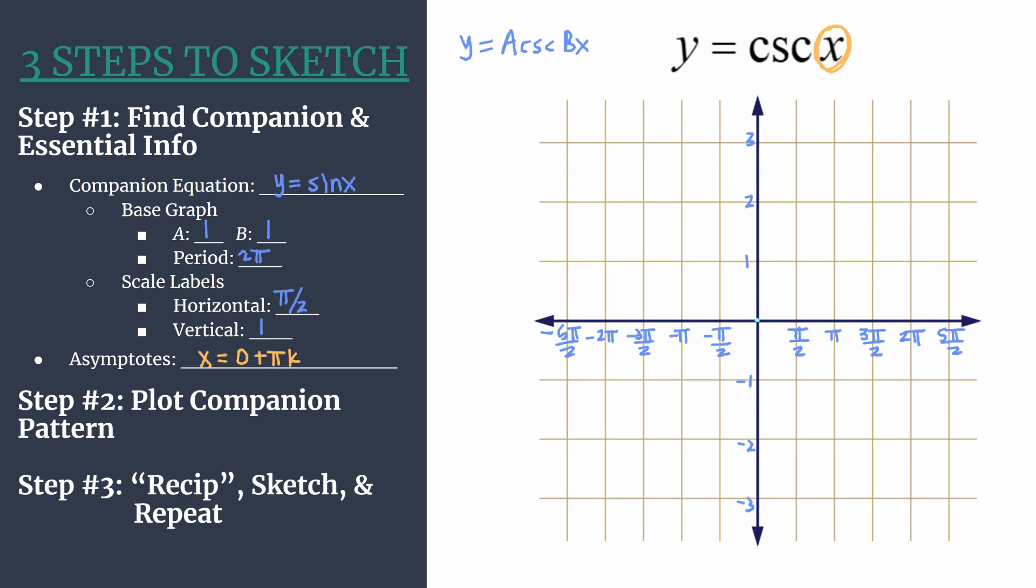Our maximum happens at the first horizontal tick mark, and the value for the y-coordinate will be a. Remember that a gave us our amplitude. Another zero at the next horizontal tick mark. A minimum happens at the third horizontal tick mark, y-coordinate comes from the opposite value a, so negative one. Then we would repeat. Here you see we have one cycle of our companion sine graph. Doing this lightly, this is what's going to get us to the graph that we actually want, which is y equals cosecant x.